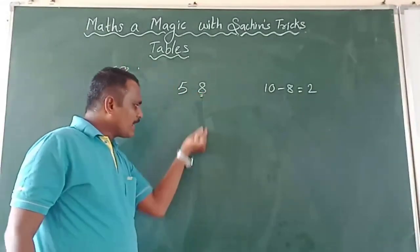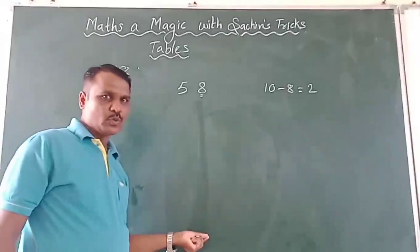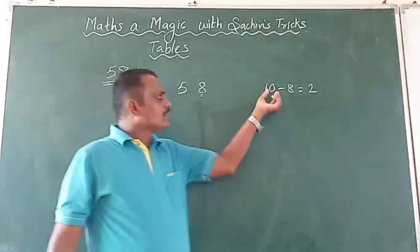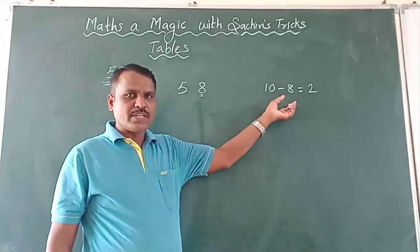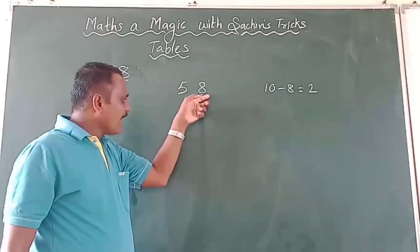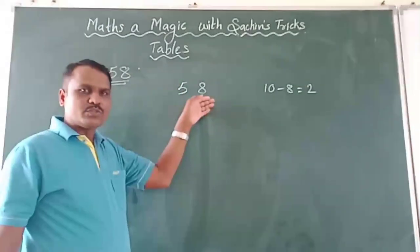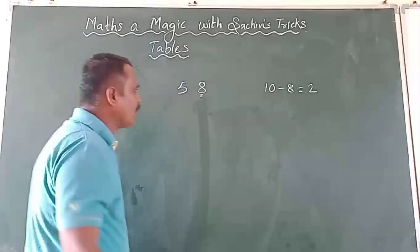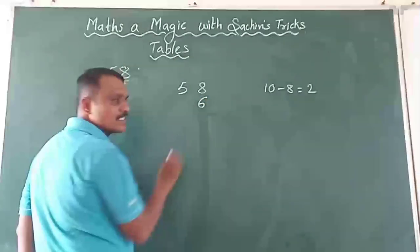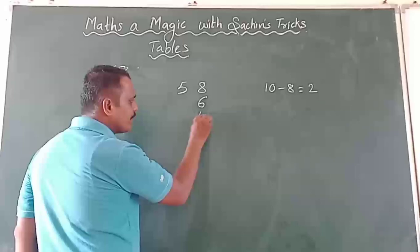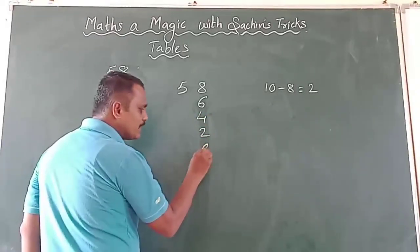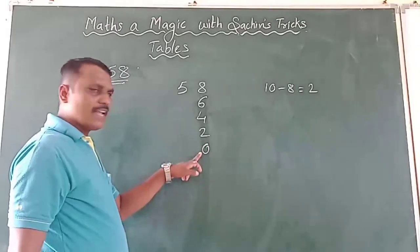So you subtract 2 continuously, 10 times. 8 is closer to 10, so 10 minus 8 equals 2. At the unit place, you subtract 2 each time. Check: 8, 8 minus 2 is 6, 6 minus 2 is 4, 4 minus 2 is 2, 2 minus 2 is 0.